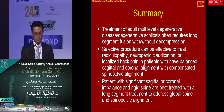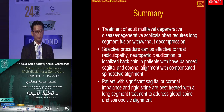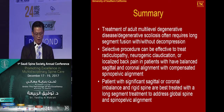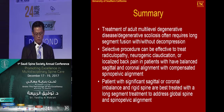In summary, treatment of degenerative scoliosis traditionally often requires long-segment fusion. However, we can be selective for treating patients with radiculopathy and neurogenic claudication who have a balanced spine, using short-segment fusion or a minimally invasive approach. Patients with significant sagittal and coronal imbalance are still best treated with long-segment thoracolumbar fusion with osteotomy in some cases.